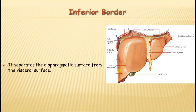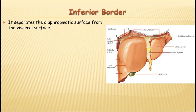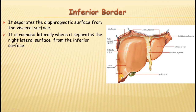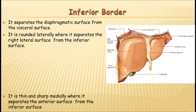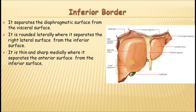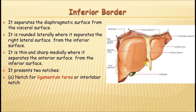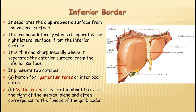The inferior border is the sharp border separating the anterior surface from the visceral surface. Laterally it is rounded, separating the visceral surface from the right lateral surface. There are two notches on the inferior border: the notch for the ligamentum teres (the interlobar notch, because anatomical lobes are divided by the attachment of the falciform ligament) and the cystic notch for the gallbladder, where the fundus of the gallbladder projects beyond the inferior border.